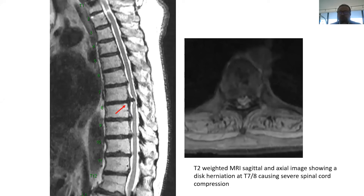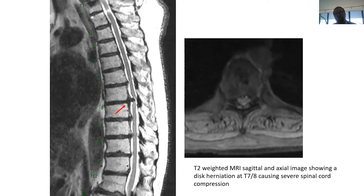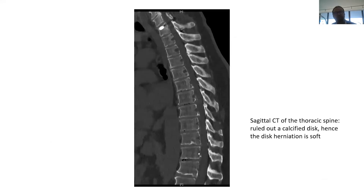That's a disc herniation. The first thing you want to verify is whether it's a calcified disc — I'm showing this case to illustrate the thought process behind each case. We are liberal with preoperative imaging because surprises are unpleasant. You need a CT scan to make sure it's not a calcified disc, because the way you resect it differs: a calcified disc requires going from the front or lateral, while a soft disc can be approached from the back.